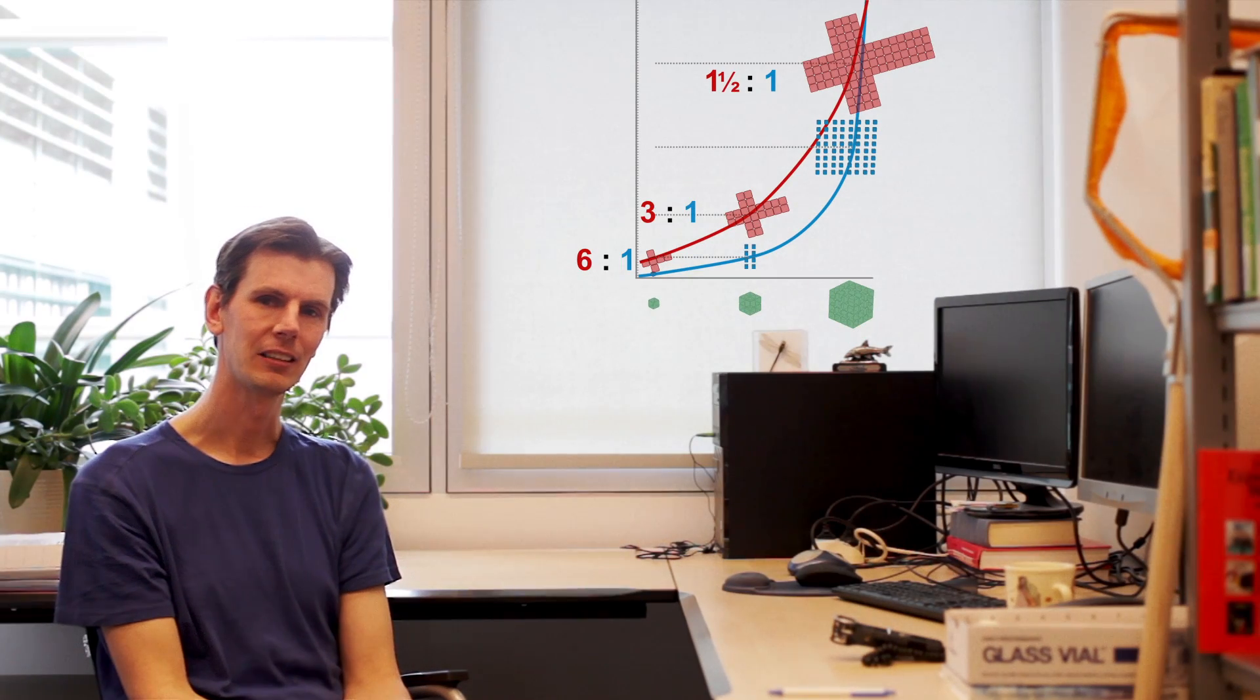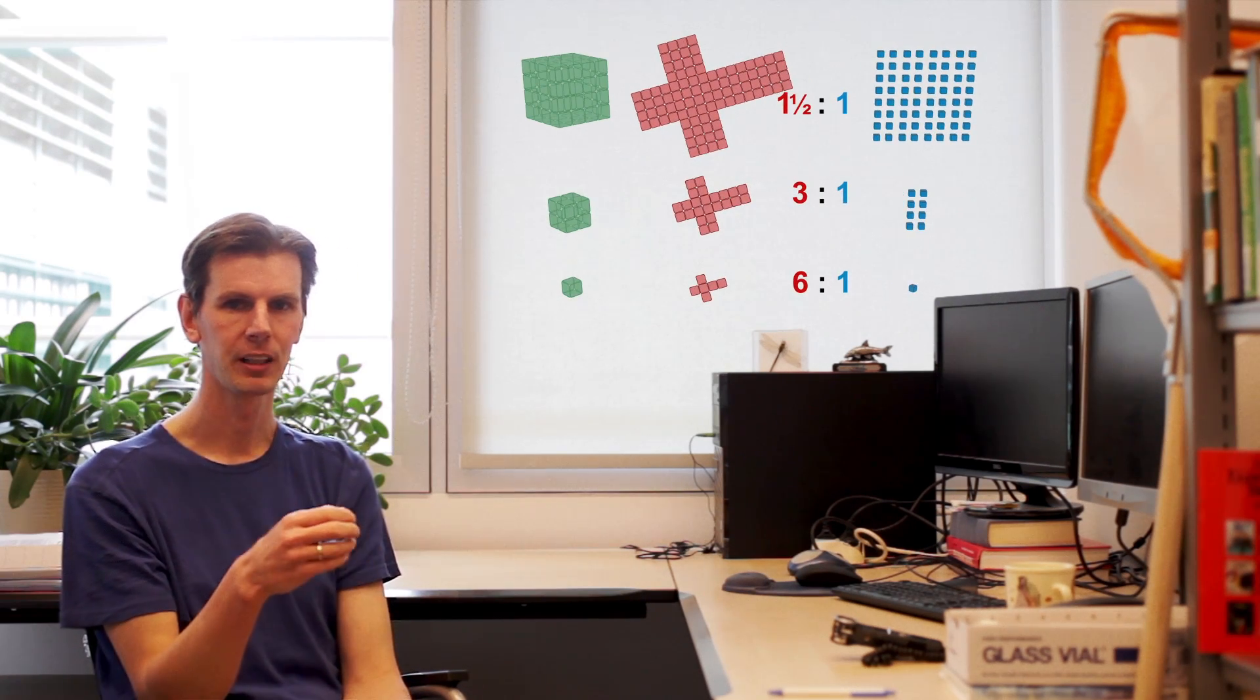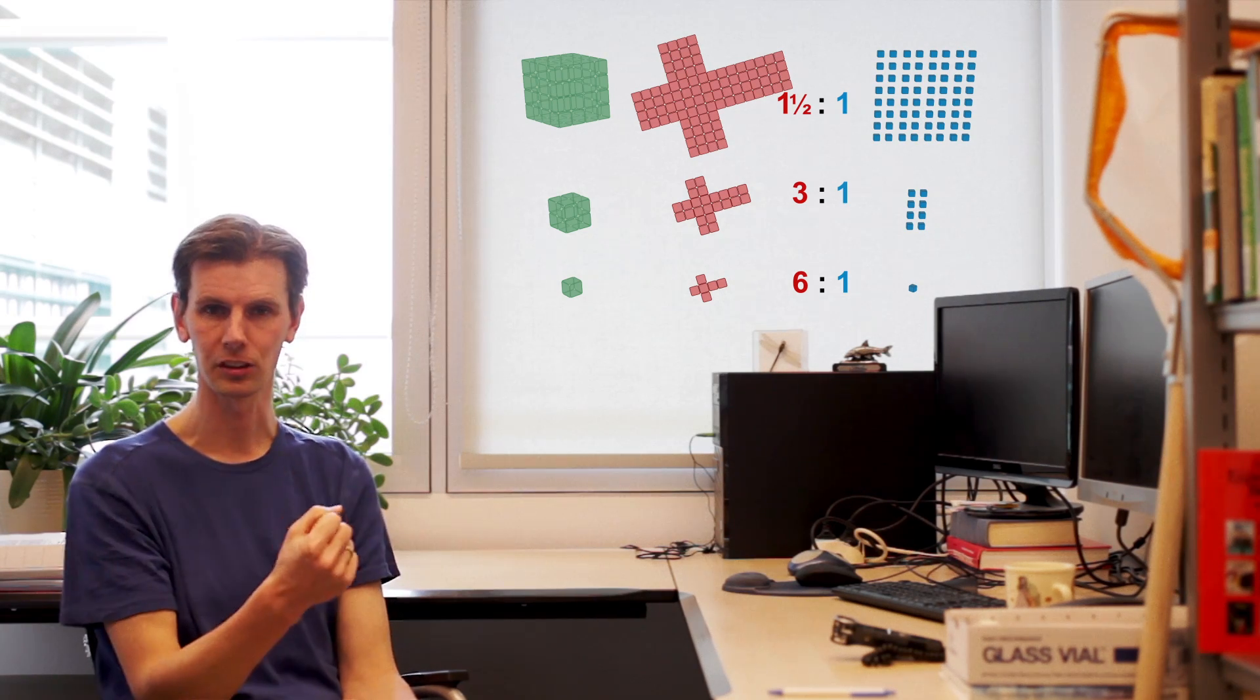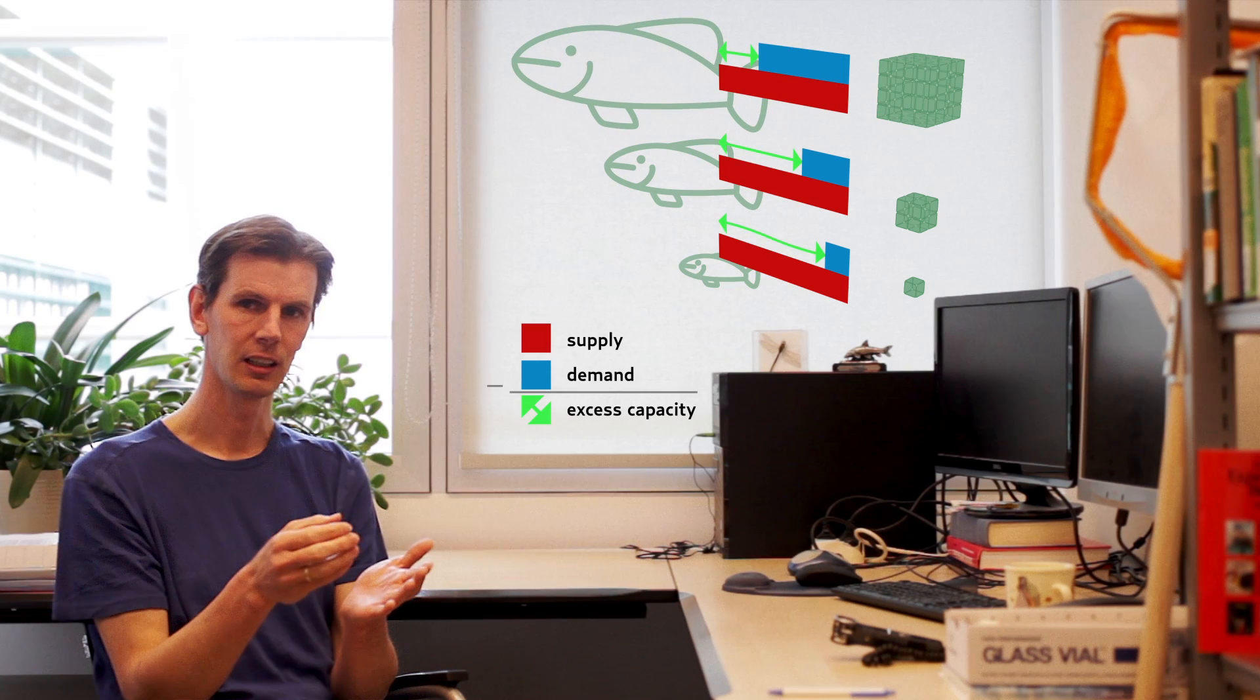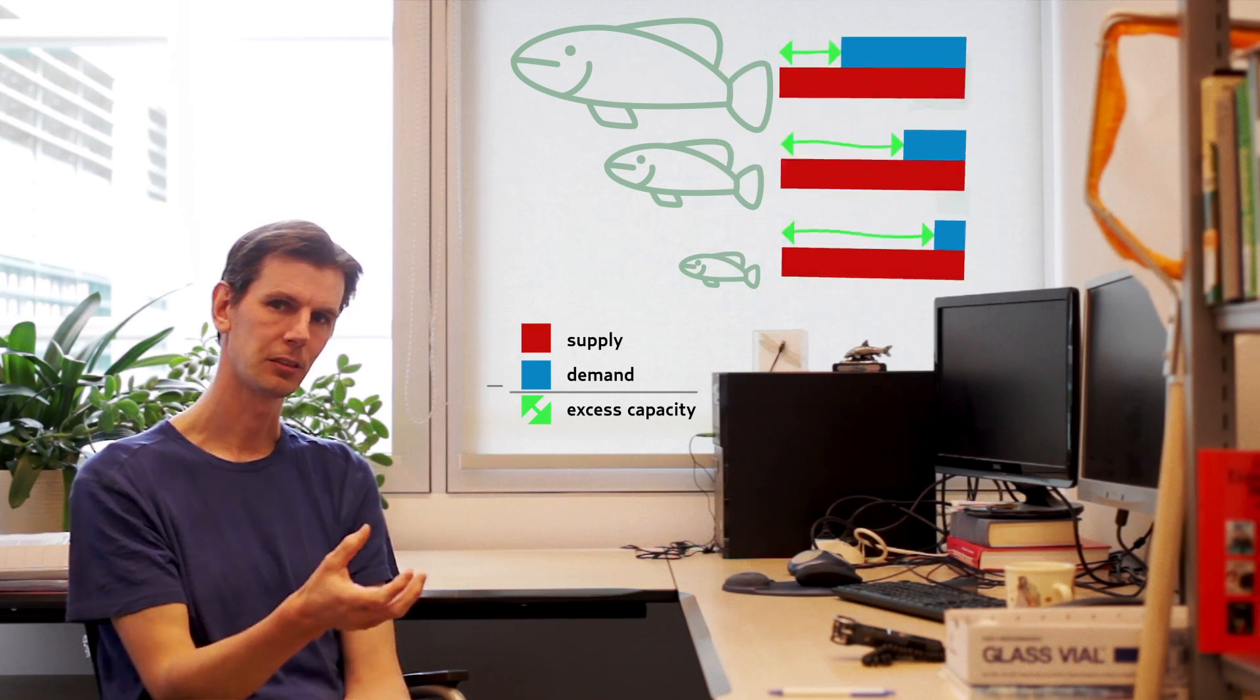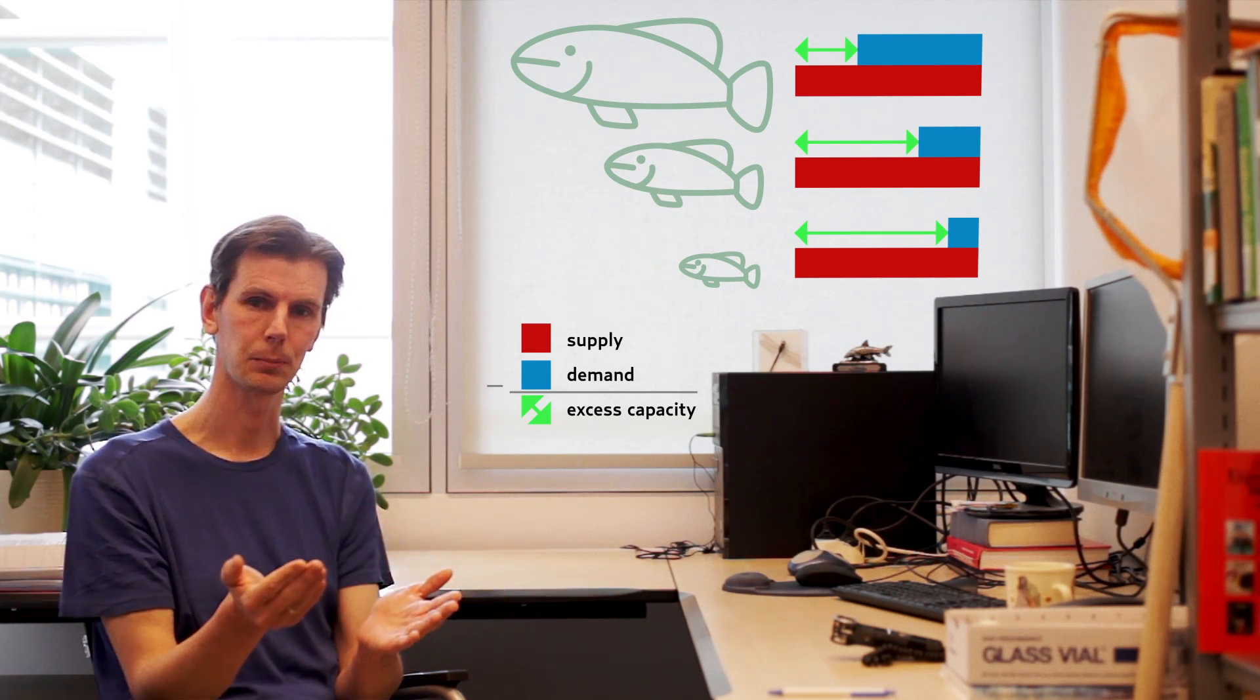This principle explains why larger animals have relatively smaller respiratory surfaces with which to take up oxygen. In growing animals, the increase in respiratory surfaces does not keep pace with the increase in mass of tissue that actually demands the oxygen. This means that the excess capacity for oxygen uptake is smaller in larger animals, and hence they have less energy available to fuel their activity, their growth, and their reproduction. This suggests that small animals are actually better off. They should have more excess capacity.